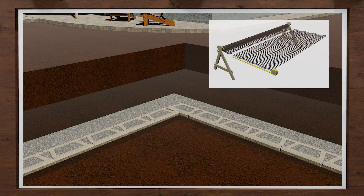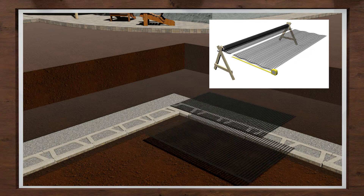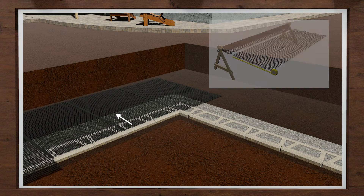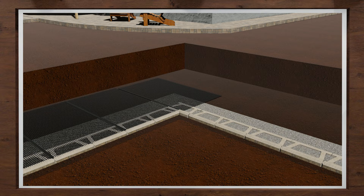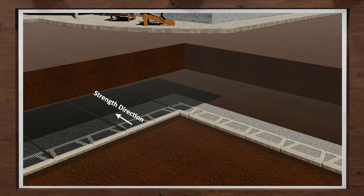When using large commercial roll geogrid, cut it to length and install it from the lip of the block back into the reinforced zone, and position it to be past the corner by 25% of the wall height. Make sure you are aware of the proper strength direction of the grid you are using — contact your materials supplier for assistance. The strength direction of the grid always goes into the hillside, which is perpendicular to the face of the wall. If installed incorrectly, the grid will only be at about half strength of what is needed. This is the most common mistake during installation.